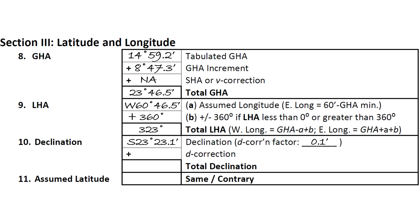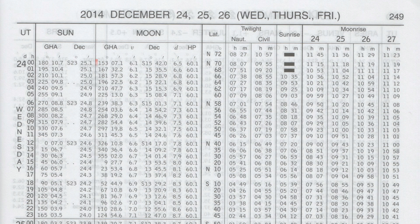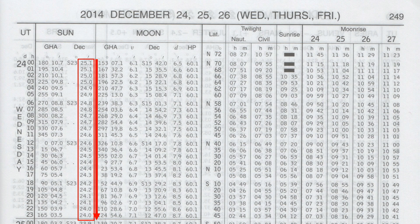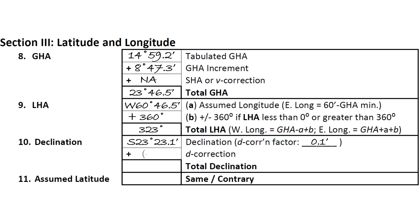We will use this factor to find our decorrection, to account for the minutes that we ignored earlier. We also need to determine if the declination is increasing or decreasing over time. If decreasing, we note a minus for decorrection. We check this by examining the declination trend on the daily pages. In our example, we see that the declination is decreasing over time, so we note a minus for decorrection.